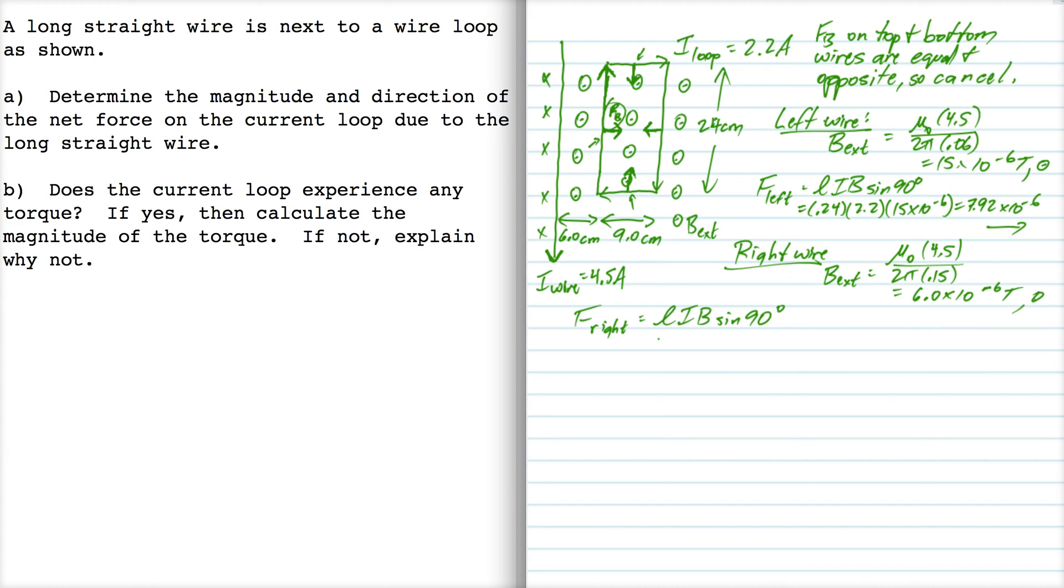And in this case, so 0.24 times 2.2. Now the B that we use is this one, the 6 times 10 to the minus 6, so that's 3.17 times 10 to the minus 6, directed to the left.